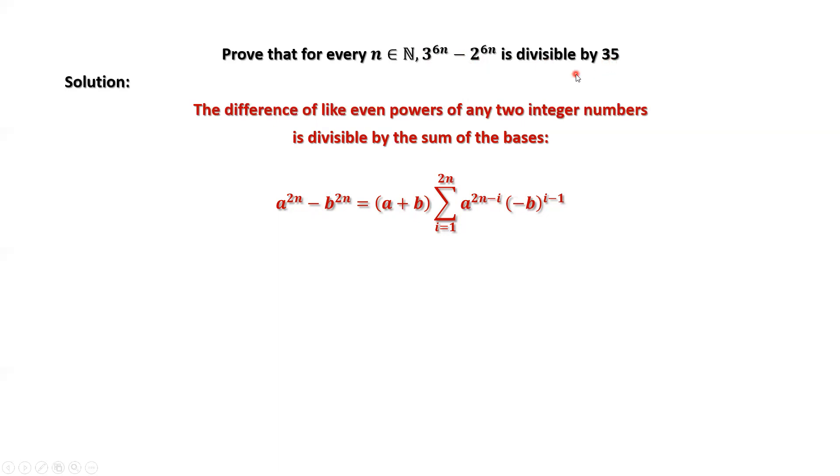We need to do some basic algebra, then use this formula. How? 3 to the power 6n minus 2 to the power 6n equals 3 to the power 3 minus 2 to the power 3, then to the power 2n.